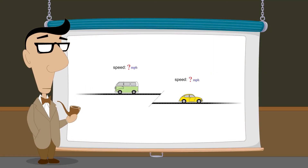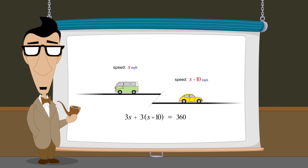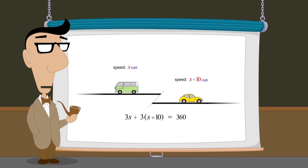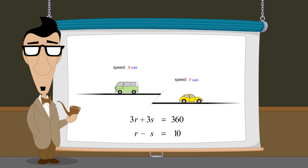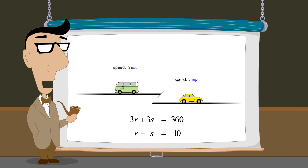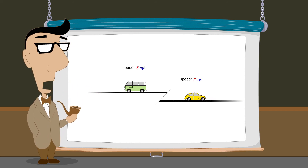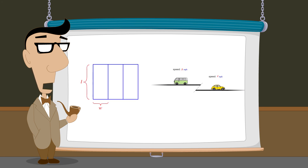So this problem containing two unknowns can be solved by creating a single equation with a single variable, expressing both unknowns in terms of that one variable. Or we can solve this problem by creating a system of two equations in two variables, where each unknown is represented by a different variable. The method which is easiest depends upon the problem. The two examples we have seen so far could be solved using either method with similar difficulty. However, in some cases creating a system of equations is clearly the easier method.